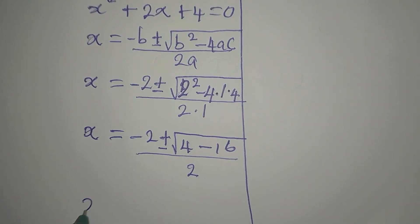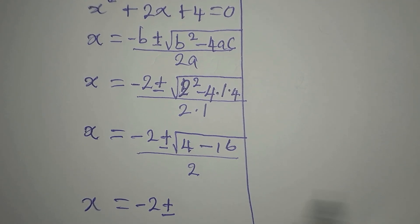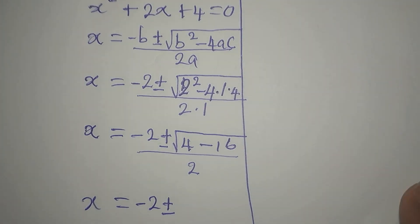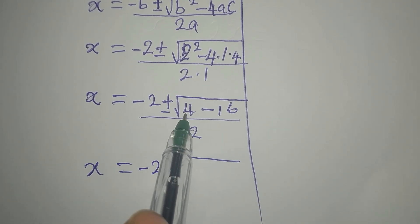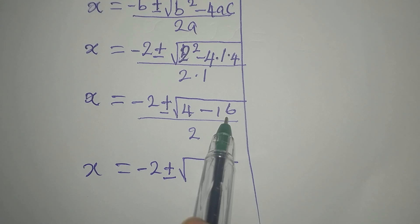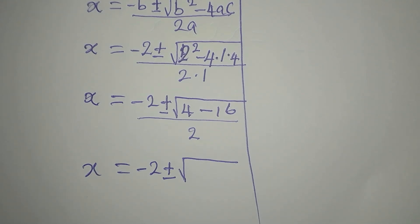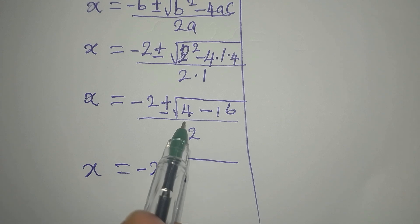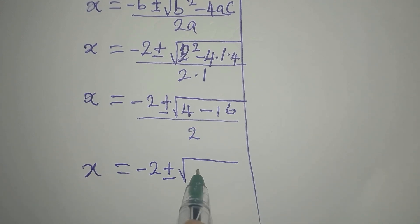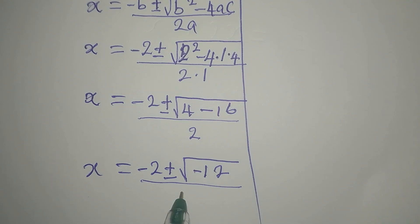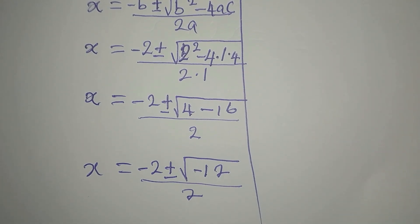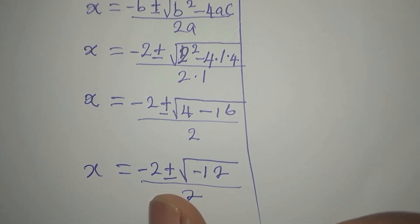Our x will be negative 2 plus or minus square root of 4 minus 16, all over 2. Do not make this mistake: some students will find the square root of 4, then find the square root of 16 before subtracting — that will not be correct. You have to compute 4 minus 16 first, which is negative 12. Then you find the square root of negative 12. I will continue on the other side.